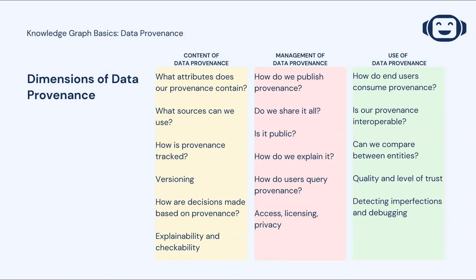In our third section, we look at how provenance is used. Can you understand how your provenance is consumed by end users? Is your provenance interoperable with data from multiple systems? Can you easily compare provenance of two distinct entities? What's the quality and level of trust in your provenance information? And do you have systems for detecting imperfections in provenance and debugging?